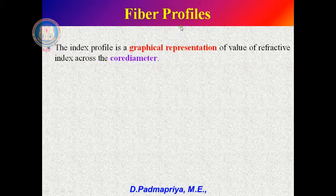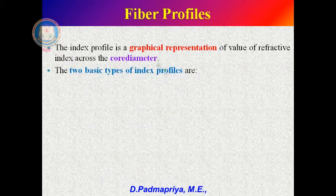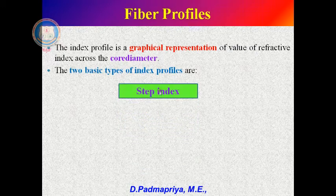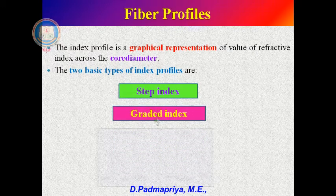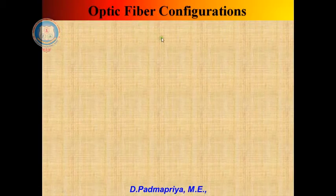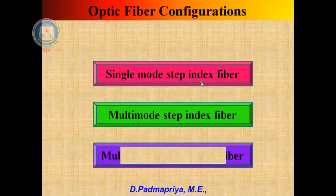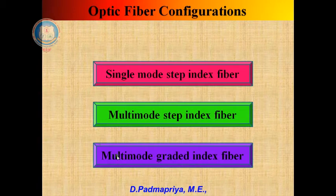Let us now see fiber index profiles. The index profile is a graphical representation of the value of the refractive index across the core diameter. There are two basic types: the step index profile and the graded index profile. Based on these profiles, there are three configurations: single mode step index fiber, multimode step index fiber, and multimode graded index fiber.